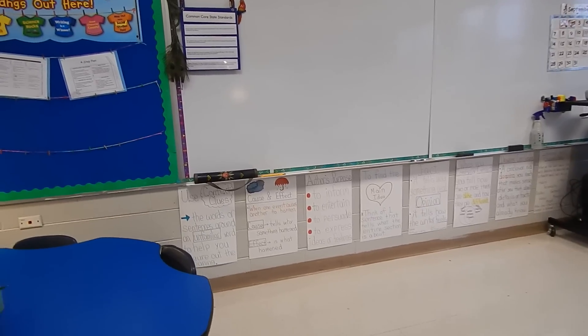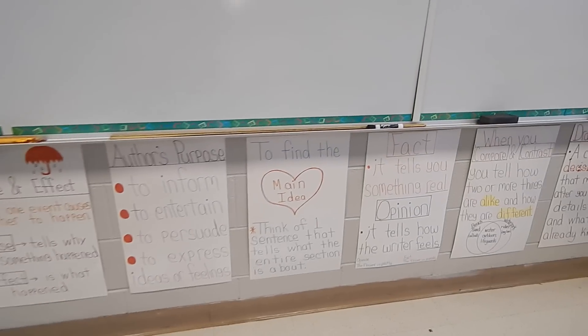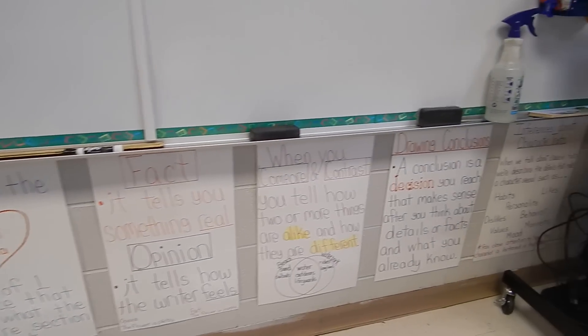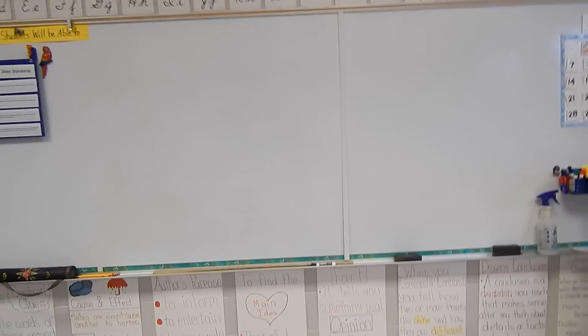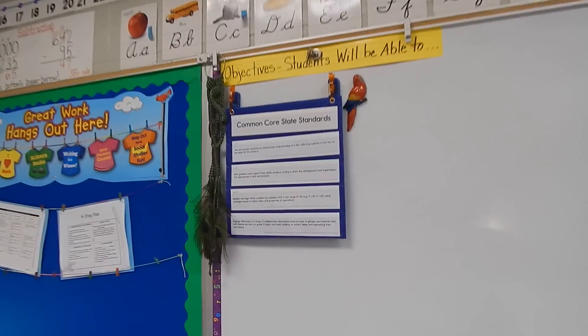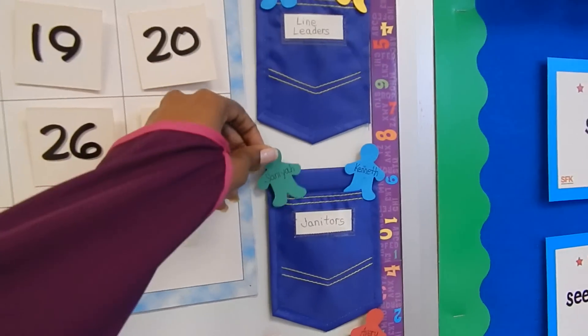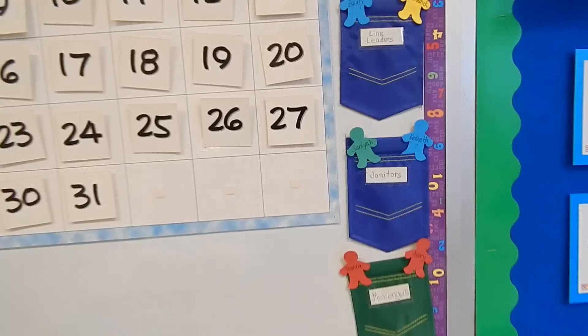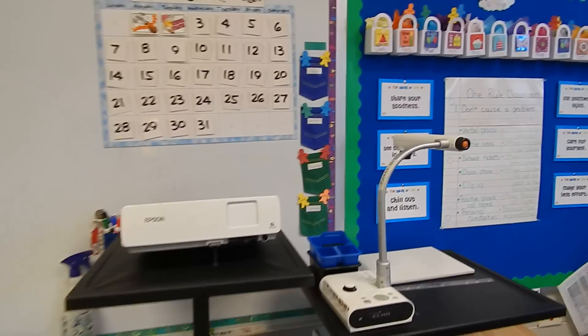Below my lovely whiteboard you can see posters — they are reading posters right here. I do have a video that goes through many of my posters if you're curious, so you can check that out. Common core state standards will go here according to different lessons. Here's the calendar and job chart — I go ahead and put their names on these cute little people. And here is my lovely Elmo — I love using that!